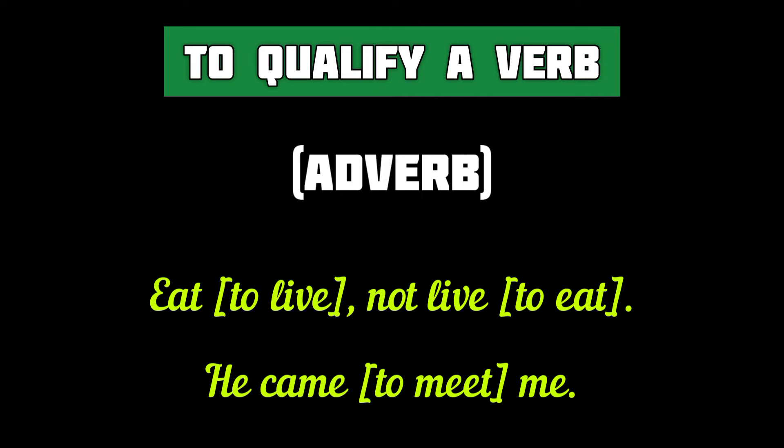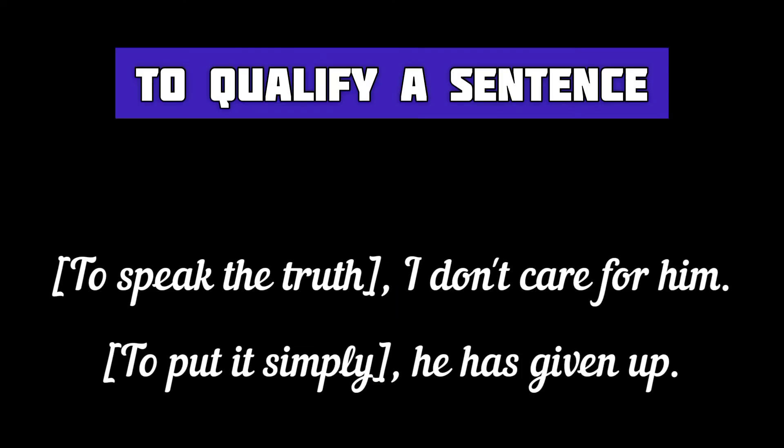So by now it is clear that an infinitive (to + V1) is made from a verb but it is used as a noun, an adjective, or an adverb. An infinitive may also qualify a sentence as well. For example: 'To tell the truth, I don't care for him.' Here 'to tell the truth' is an infinitive phrase qualifying the sentence 'I don't care for him.' 'To put it simply, he has given up.' Here 'to put it simply' is an infinitive phrase qualifying 'he has given up.'